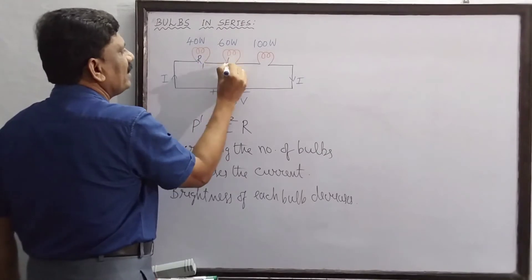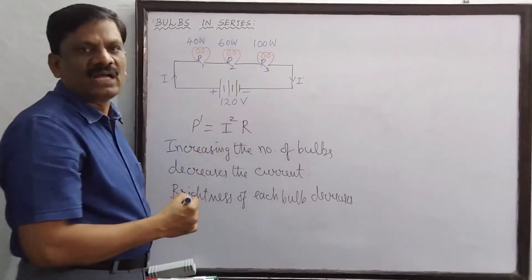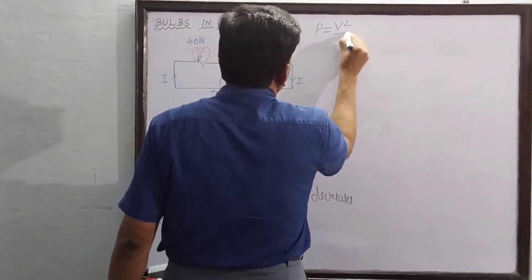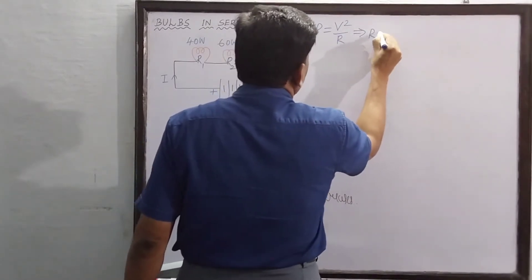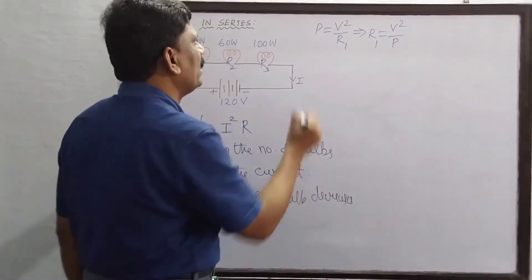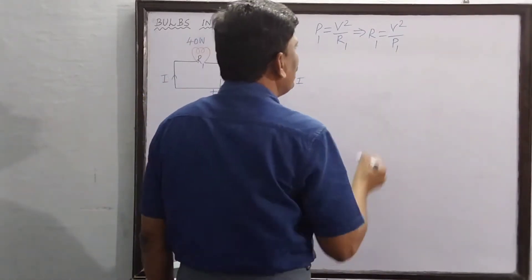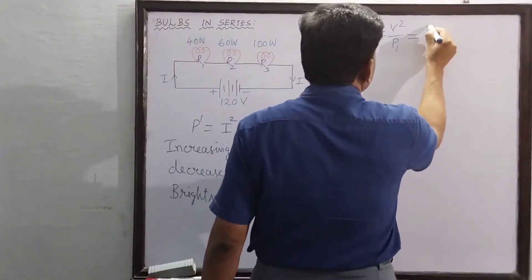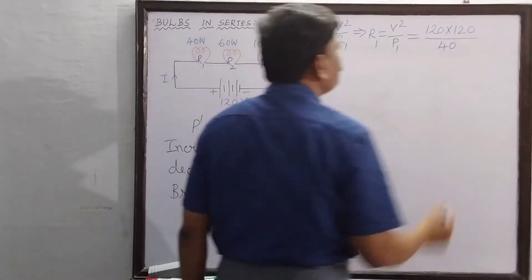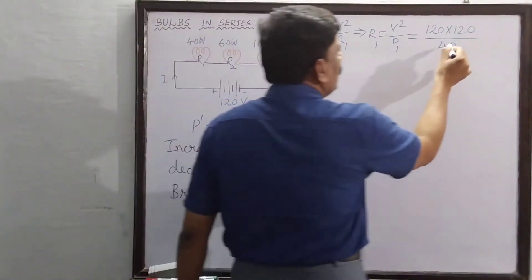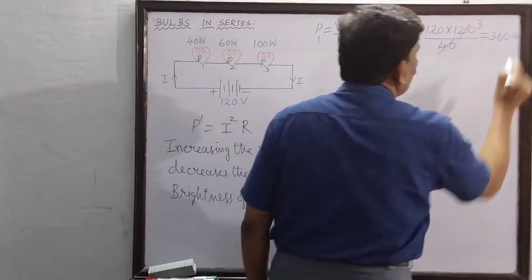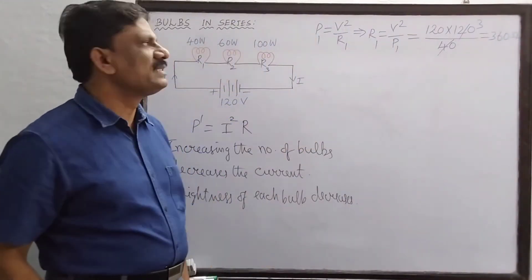We will find the resistance of each filament R1, R2, and R3. Using P = V²/R, we get R = V²/P. For the first bulb: R1 = 120 × 120 / 40 = 14400 / 40 = 360 ohms. So 360 ohms is the resistance of the first bulb.